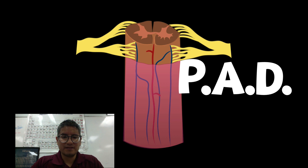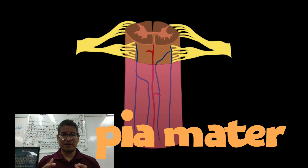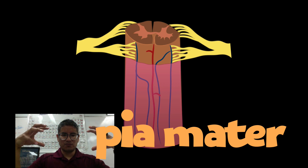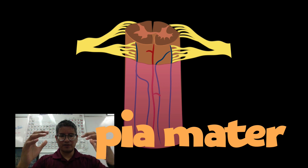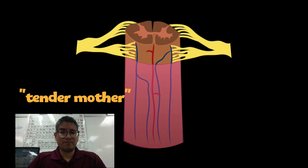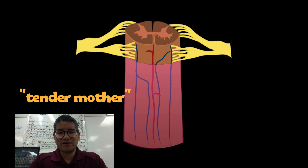P stands for pia mater. Pia mater is the first layer of protective tissue that wraps literally around the spinal cord and brain like saran wrap — hugging around all the contours. Pia mater actually means 'tender mother' or 'soft mother.' Just as a tender mother hugs her child, the pia mater hugs intimately around all the contours of the spinal cord and brain.